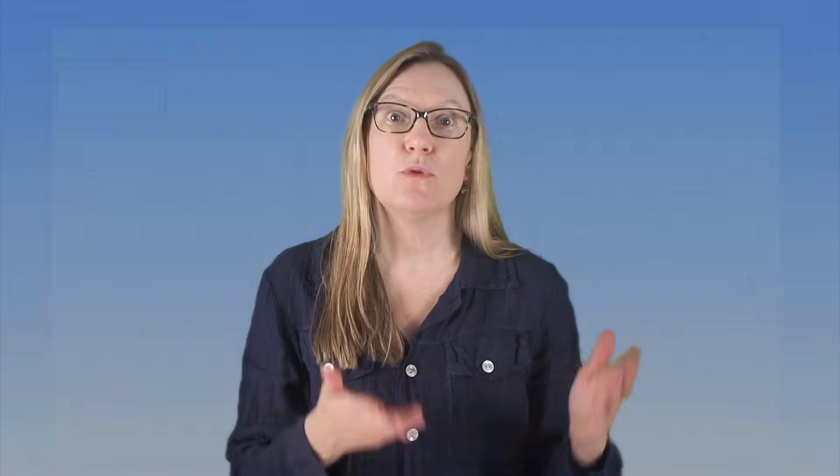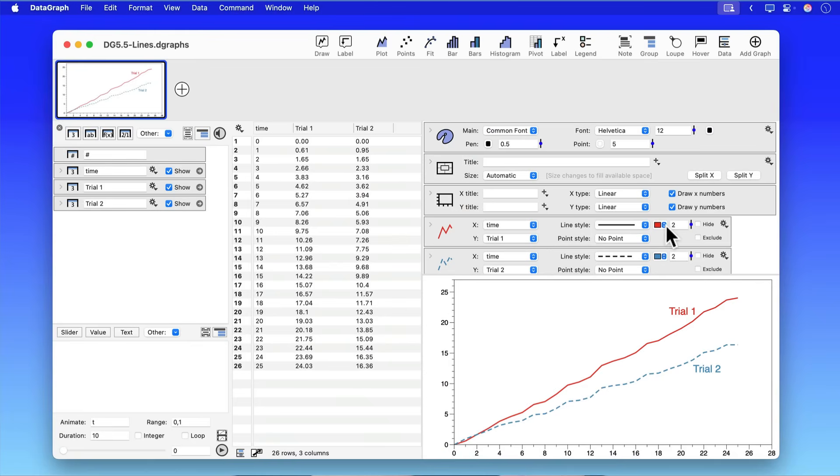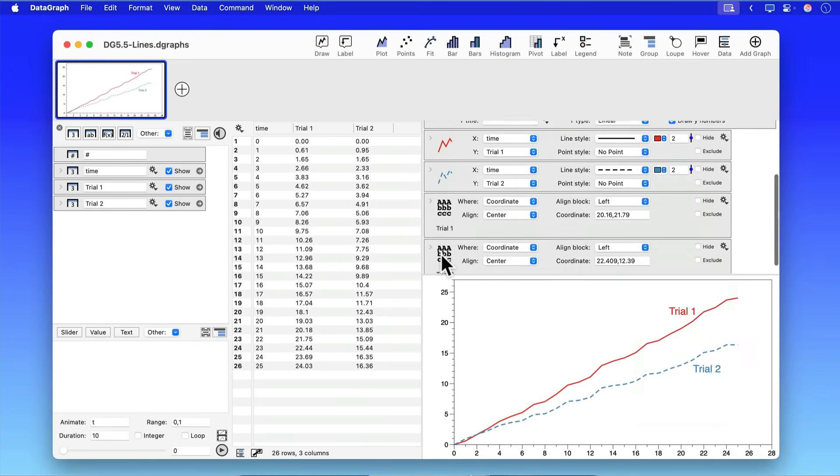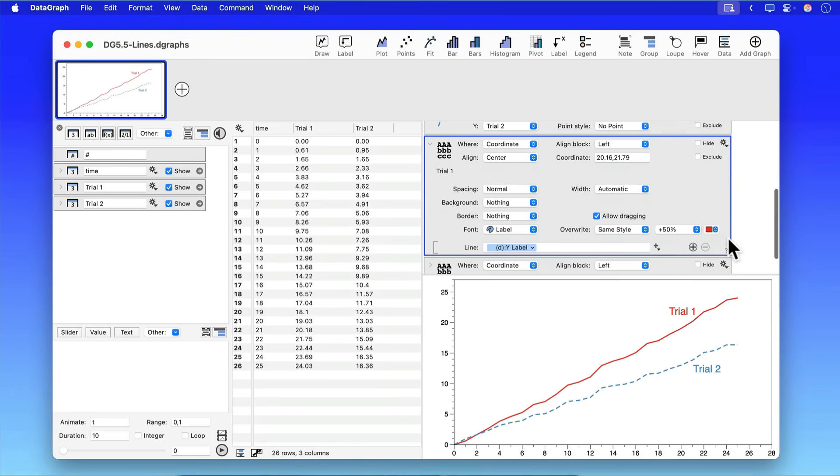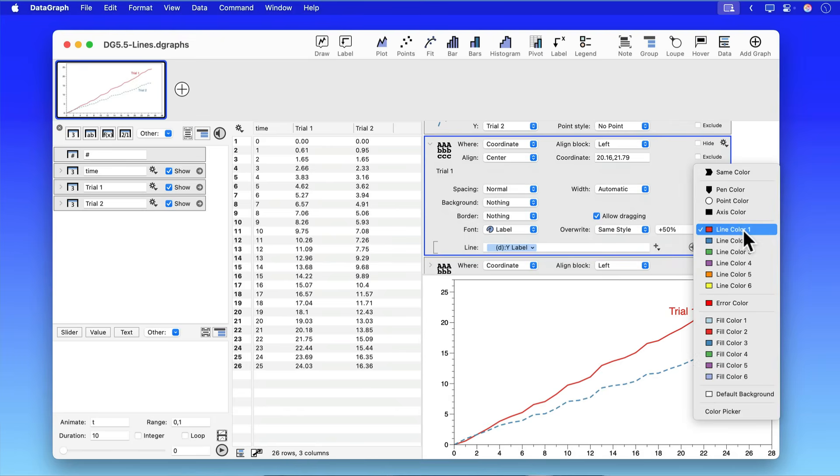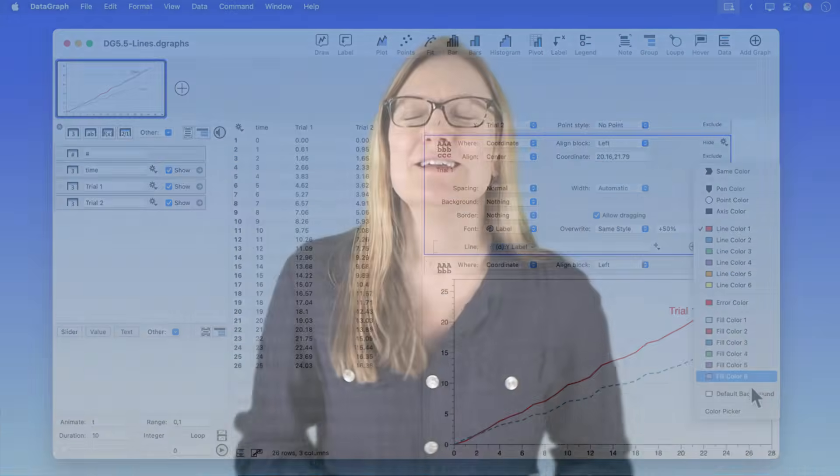Now let me give you an example where we have a graph with a line and a label and we've set them both to the same color within the color menu. We've set them to line color one and you can use these colors in any ways you want. They're just organized into line colors. There's the error color which is used as the default color for error bars and then there's fill colors. In any case, we have this graph both are set to the same line color but we want to customize the color.